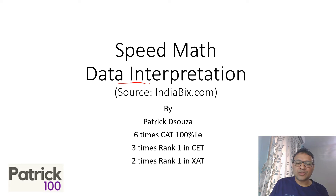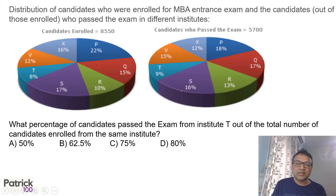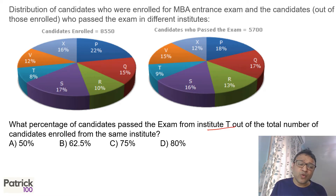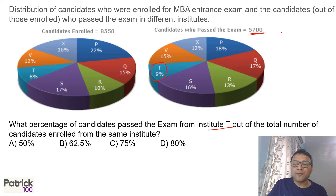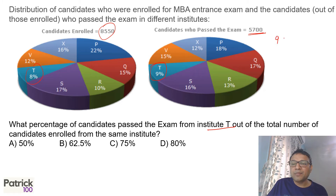We are looking at a data interpretation and repetition question. What percentage of candidates passed their exam from Institute T after the total number of candidates enrolled from the same institute? We basically want how many people passed. So 9% passed out of 5,700, and enrolled is 8% of 8,550.